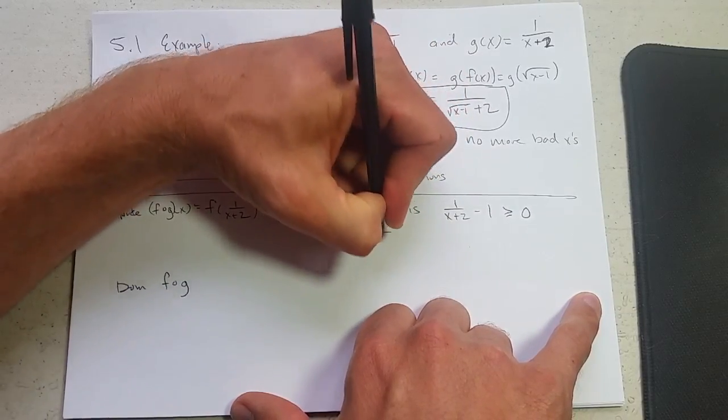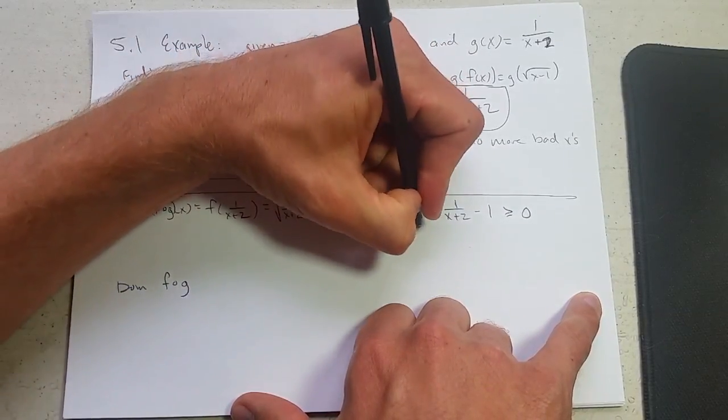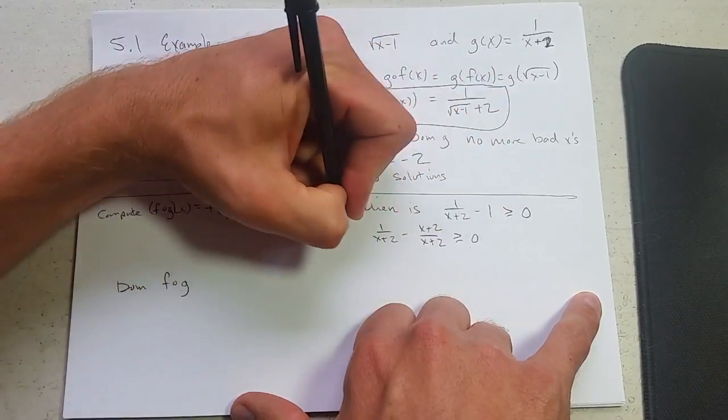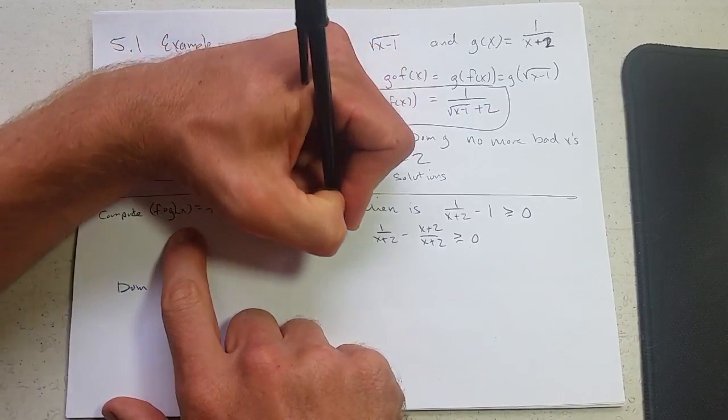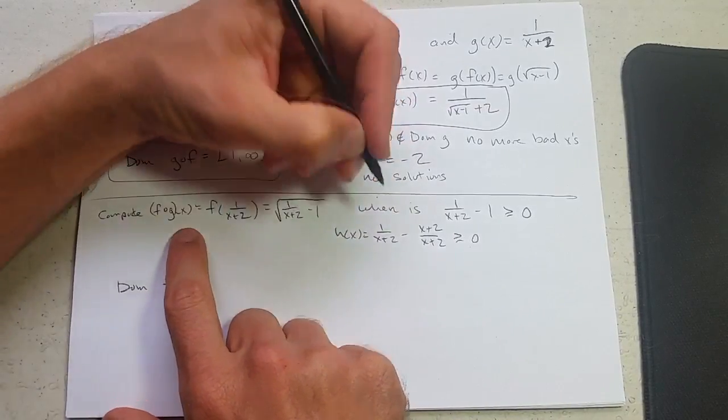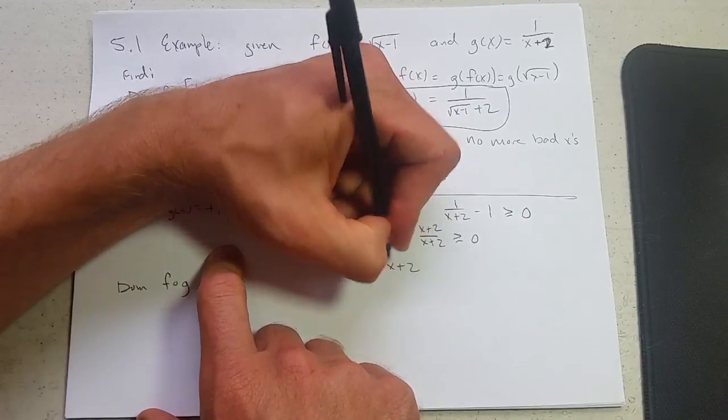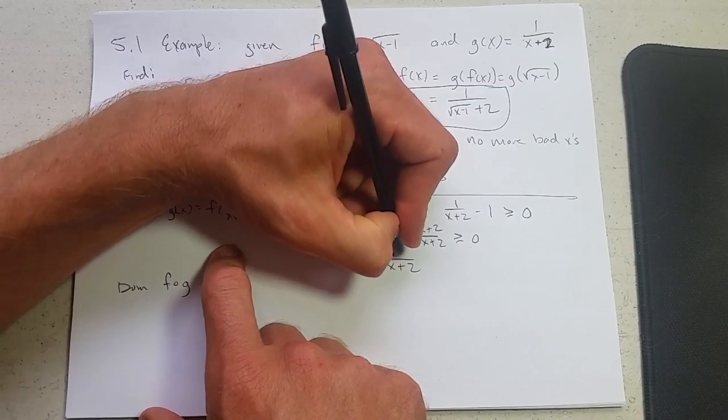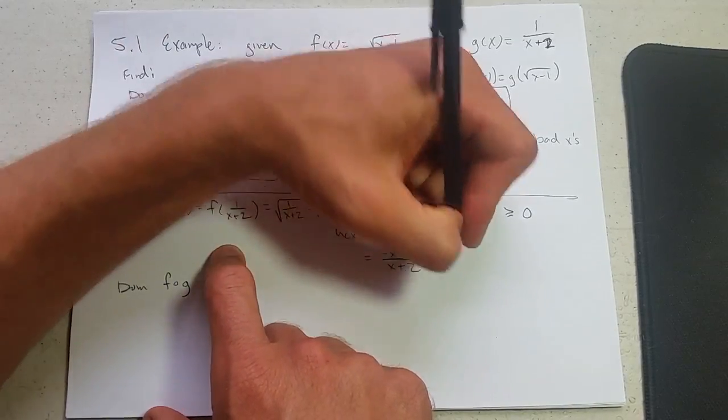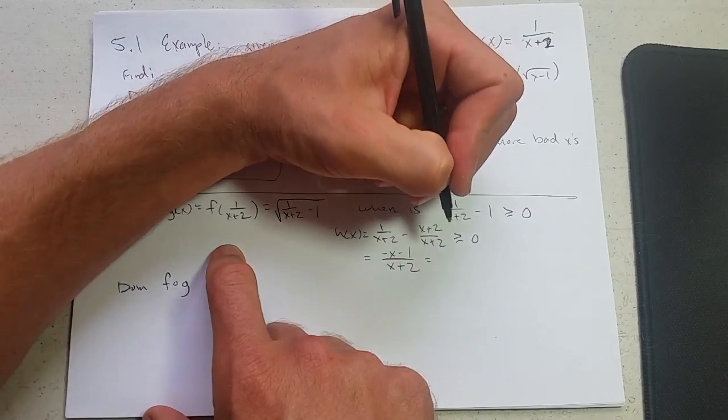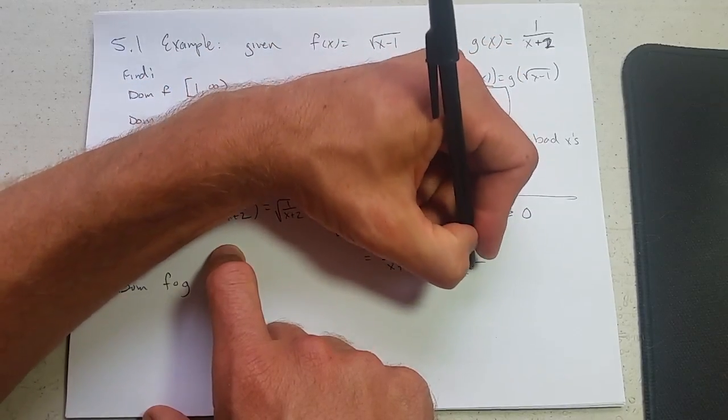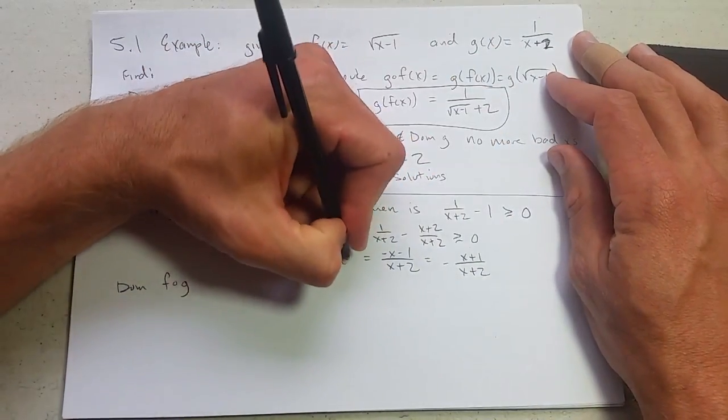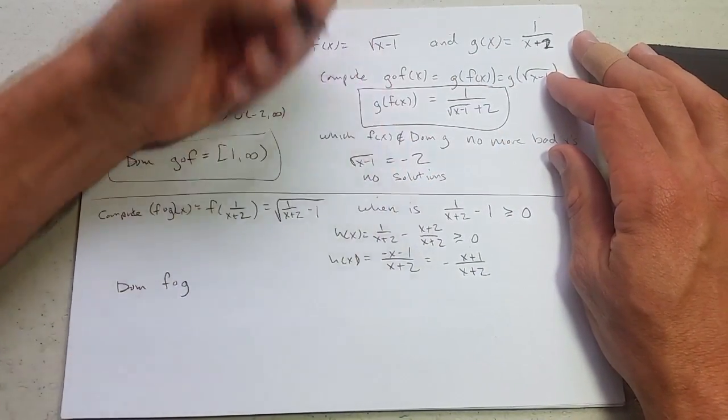So common denominator. And let's give this function a name. We already used f and g, so we'll call this h of x. Now we can subtract these very easily. 1 minus x minus 2 minus x minus 1. And let's rewrite that. There we go. There's h of x.